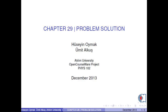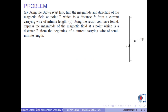Hello everyone, I am Umut Alkuş. In this video, we will solve one problem in Chapter 29. Part A: Using the Biot-Savart law, find the magnitude and direction of the magnetic field at point P, which is a distance r from a current-carrying wire of infinite length.